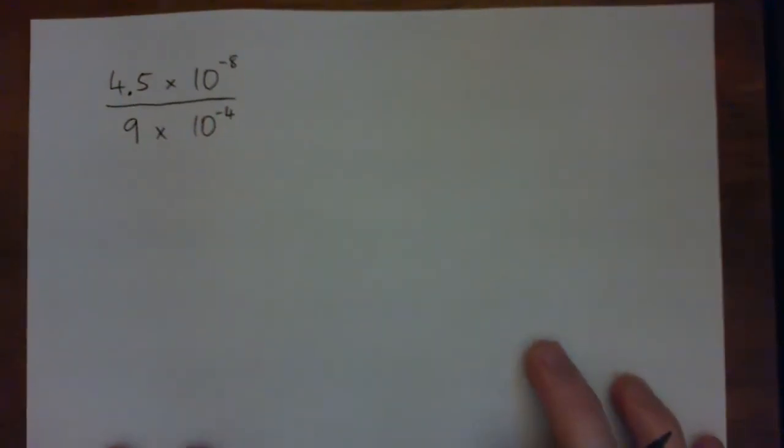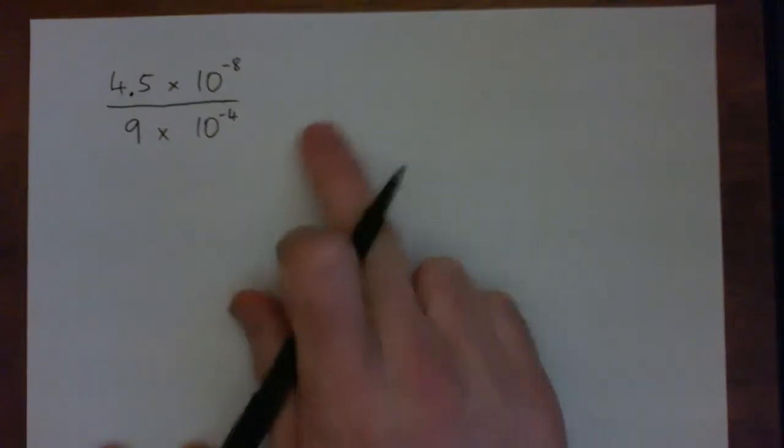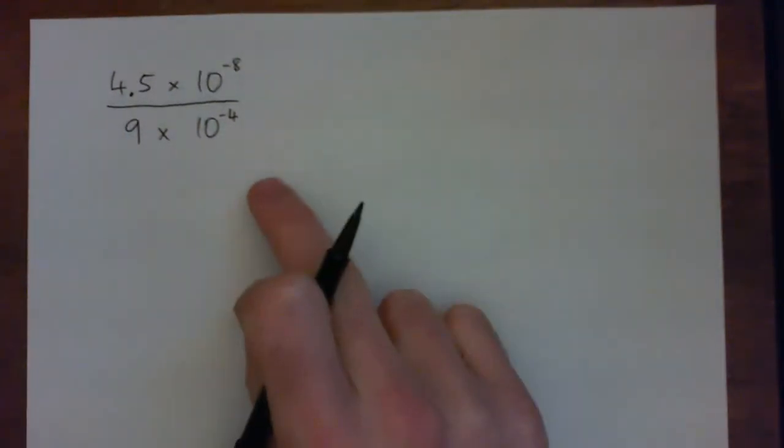Hi everybody, so let's go over this question. We've got 4.5 times 10 to the power of negative 8 over 9 times 10 to the power of negative 4. And we need to give our answer in scientific notation.